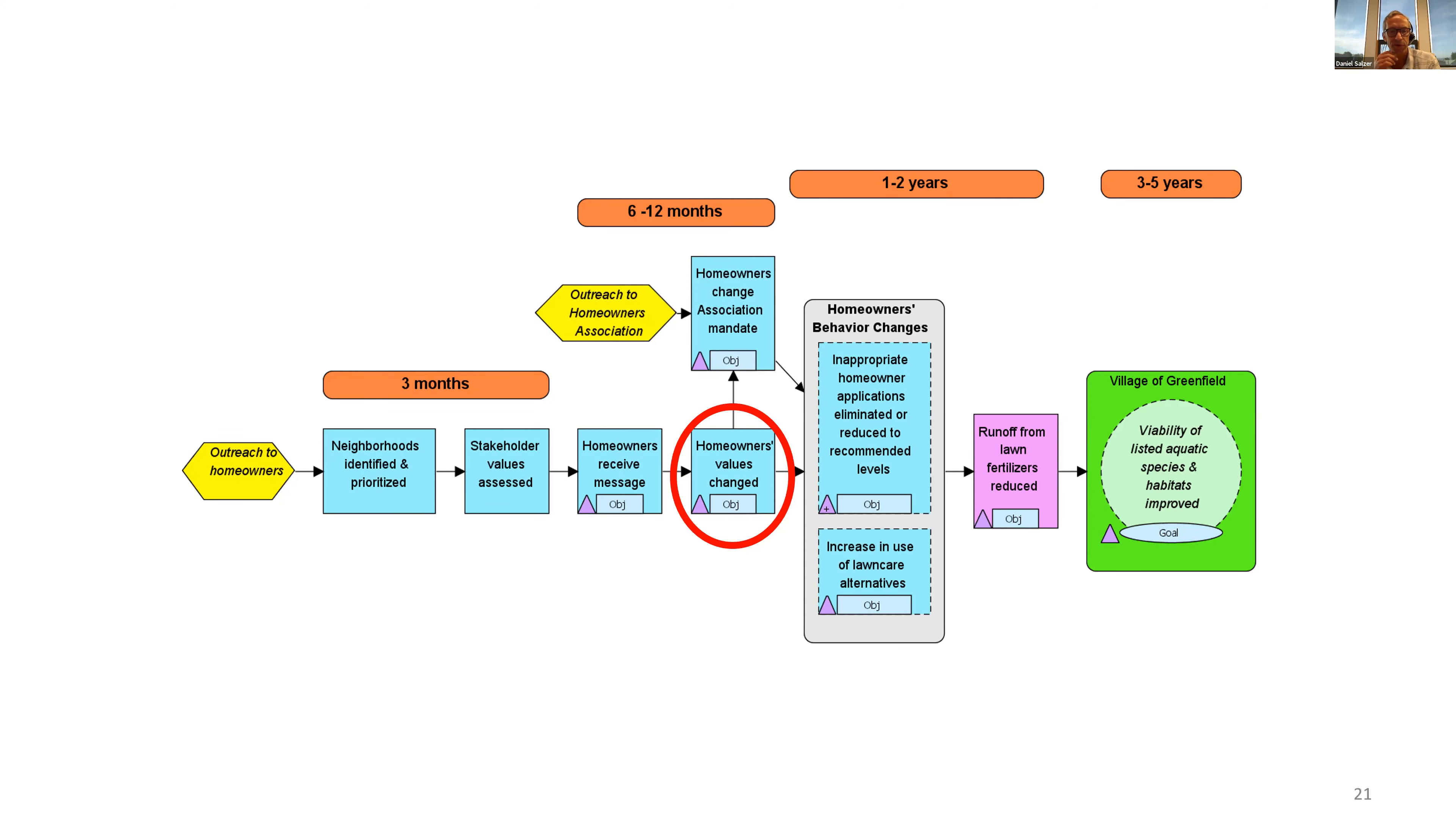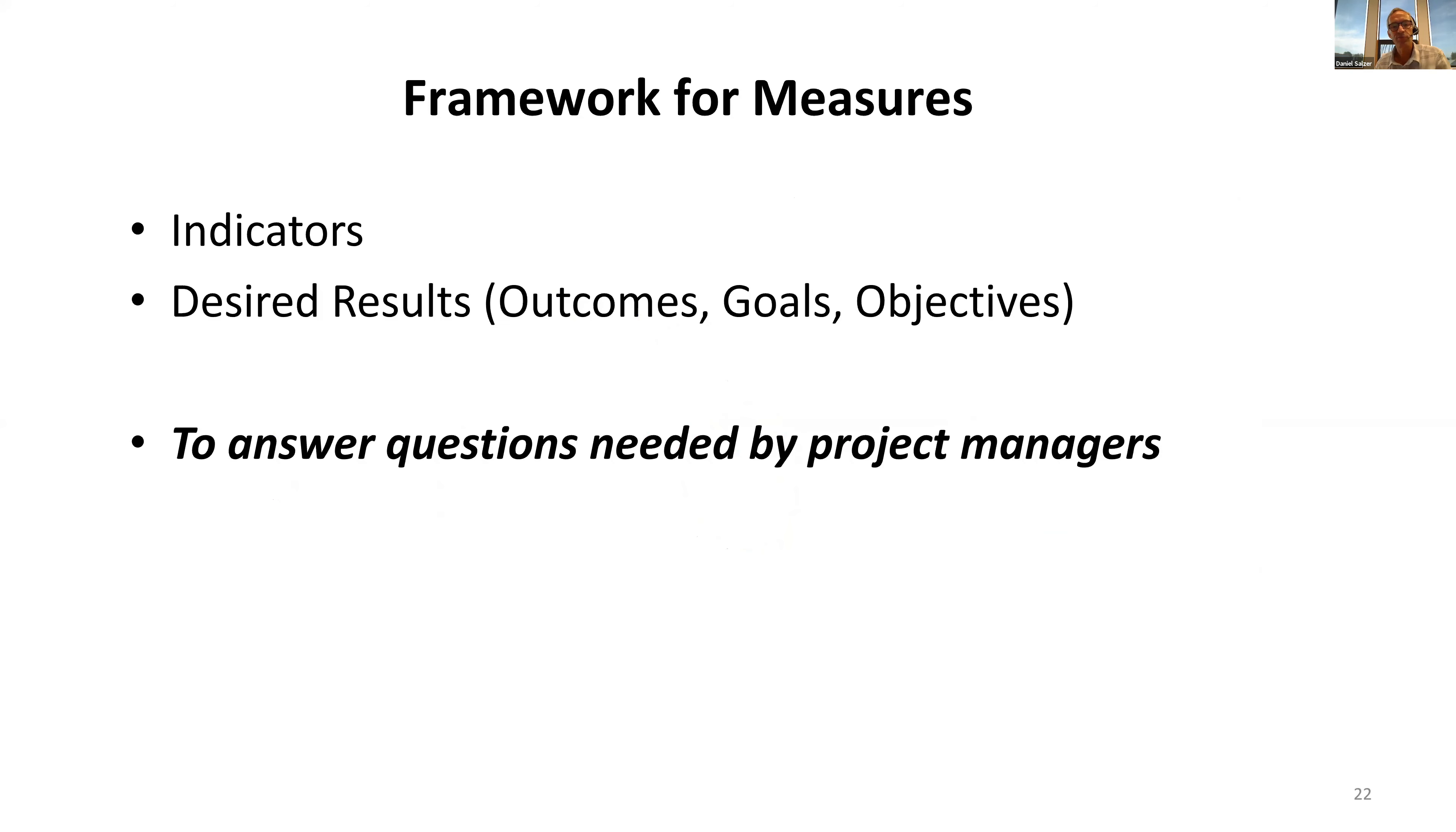It adds a little bit more completeness there. Building a results chain will often trigger additional strategies that might not have been identified as part of the situation analysis diagram. Here the homeowners association outreach has been identified as another strategy.